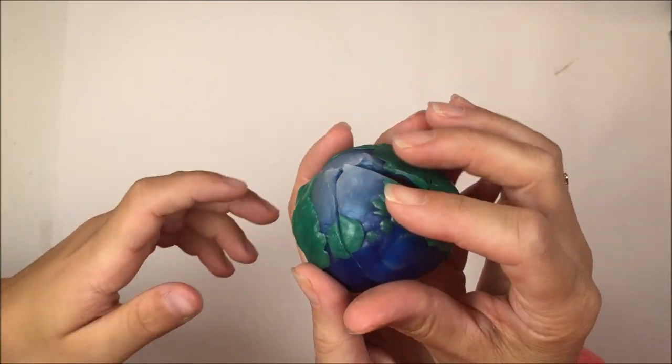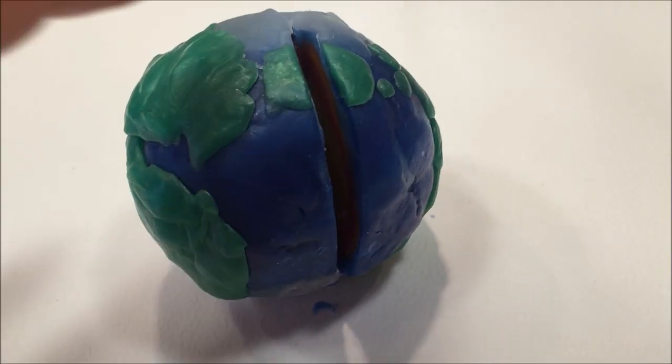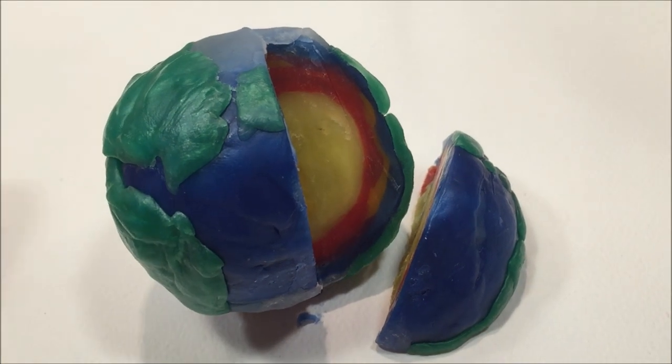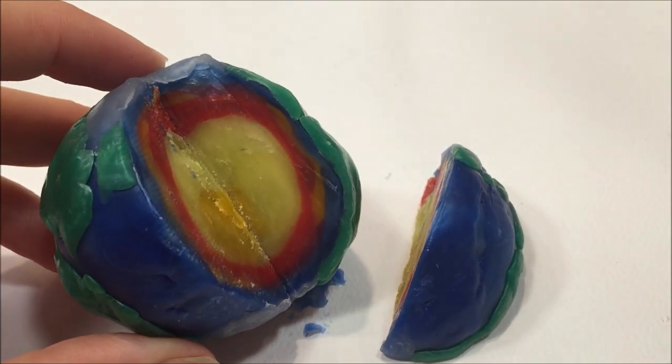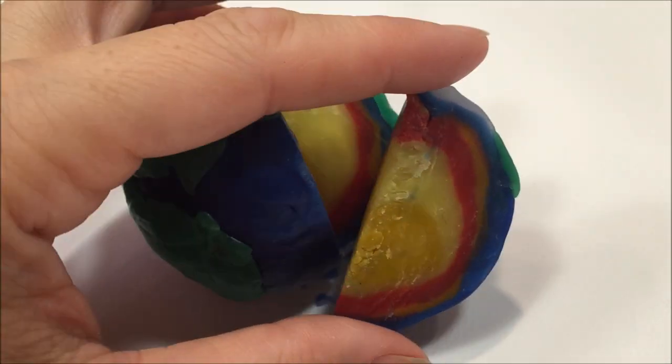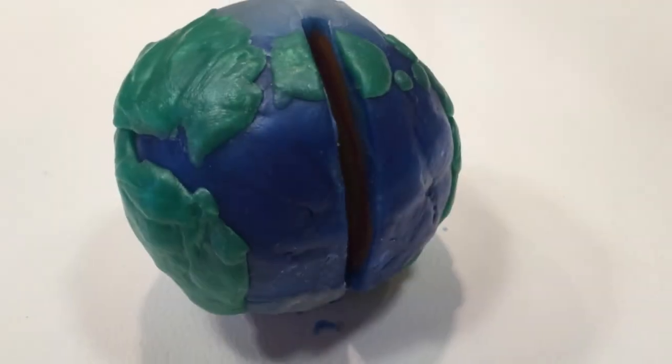So you can also do this with polymer clay and then you can cut it and then bake it and then that way it will keep its form. Because this wax over time will kind of get deformed on warmer days and we already noticed that after we had worked on it we had let it sit on the table and it kind of got a little bit deformed.